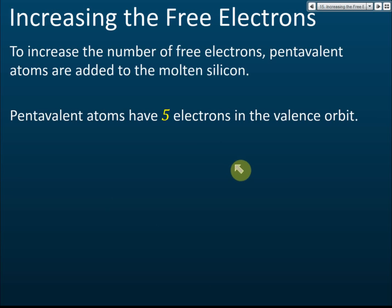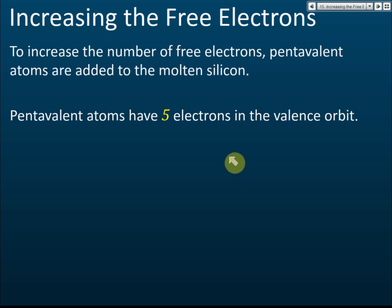There are two types of charge carriers in a semiconductor: free electrons and holes. If you want to increase the conductivity, you can either increase the free electrons or increase the holes. Either way, increasing free electrons or holes will increase the conductivity.